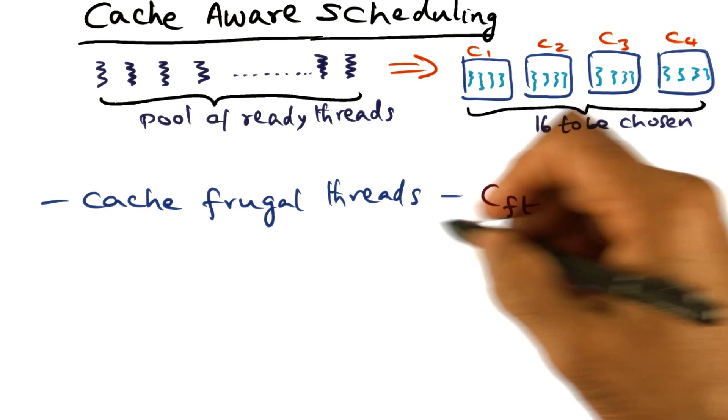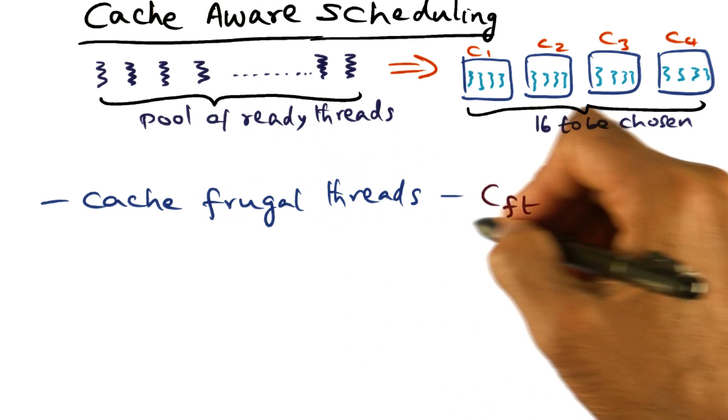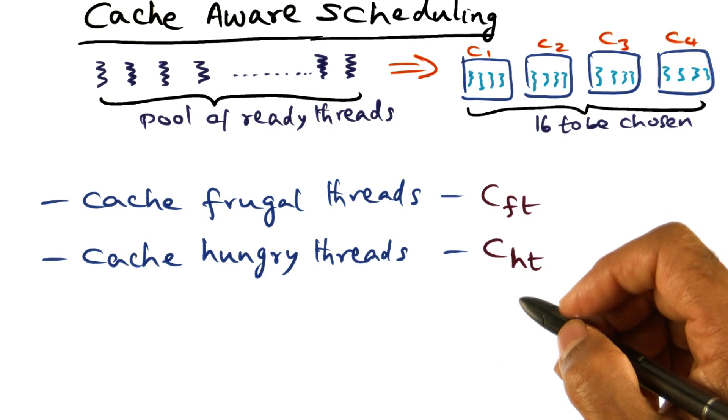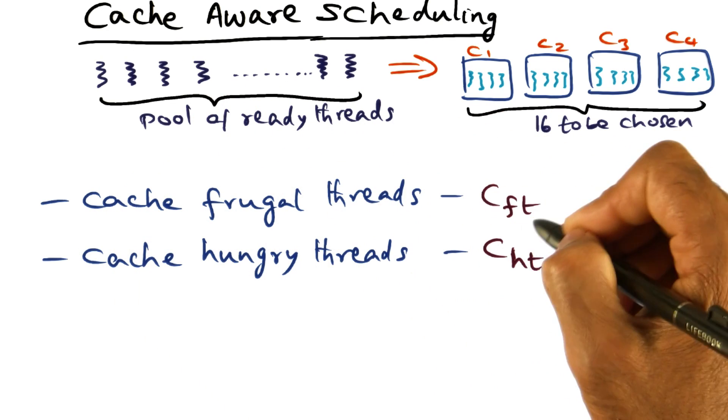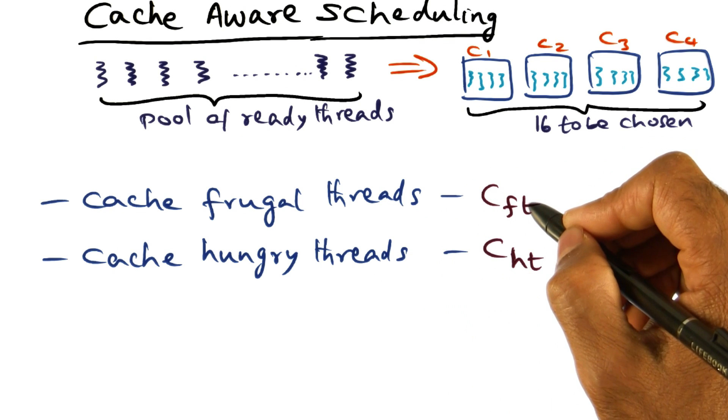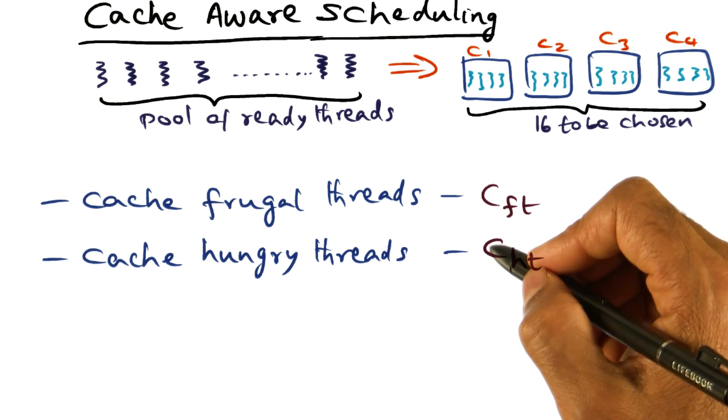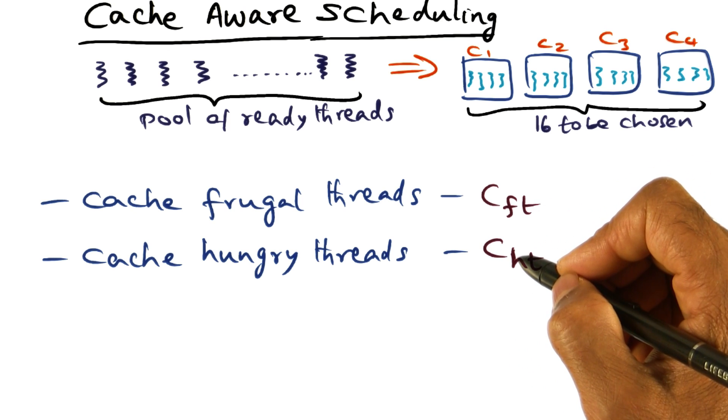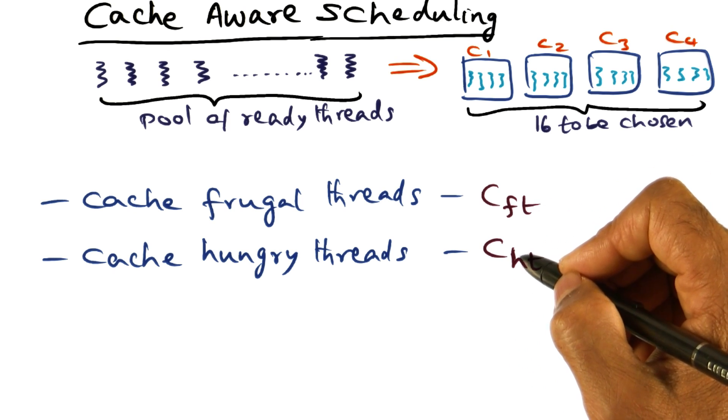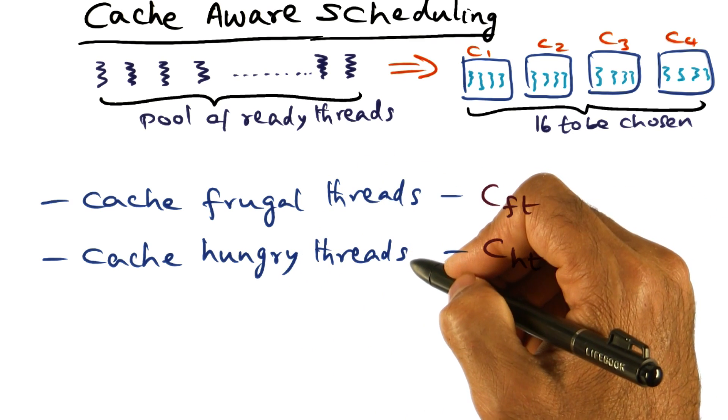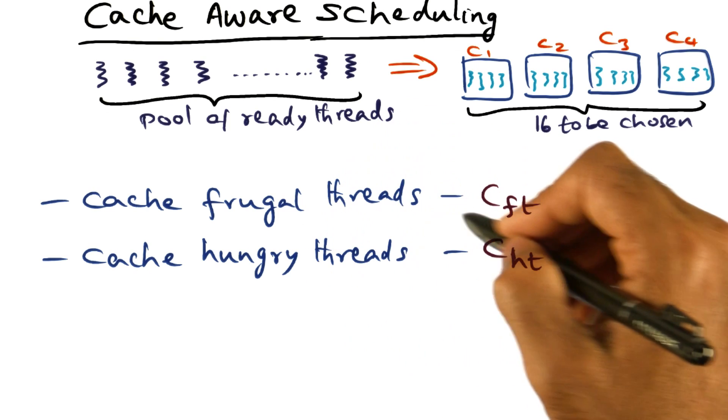We're going to characterize threads as either cache-frugal threads or cache-hungry threads. Cache-frugal threads are ones that require only a small portion of the cache to keep them happy. On the other hand, a cache-hungry thread is one that requires a huge amount of cache space in order to keep it happy, meaning that the working set of cache-hungry threads is much bigger than the working set of the cache-frugal threads.